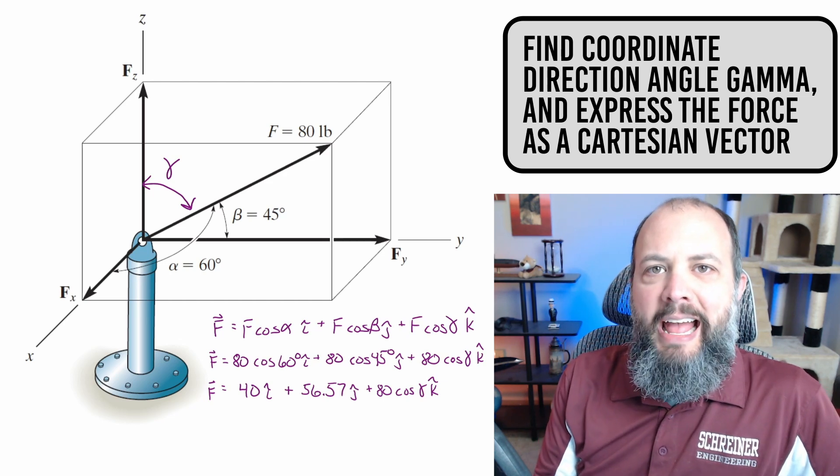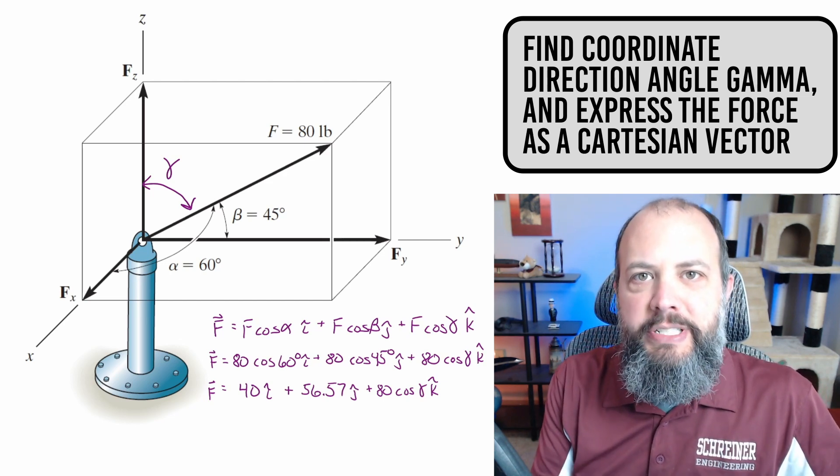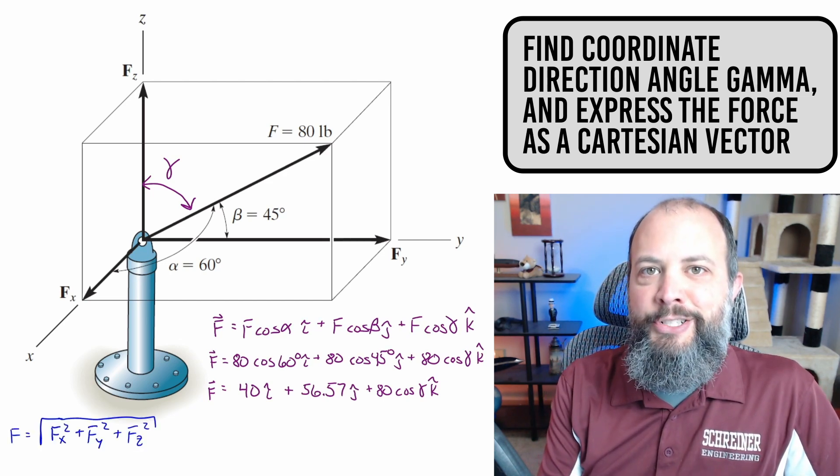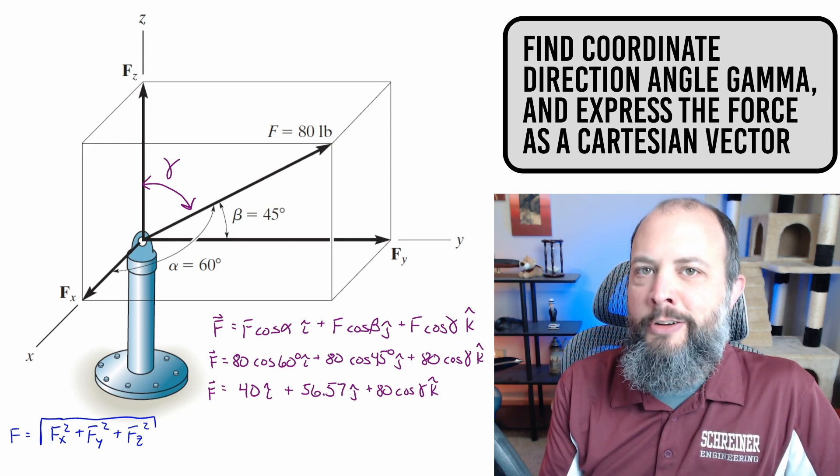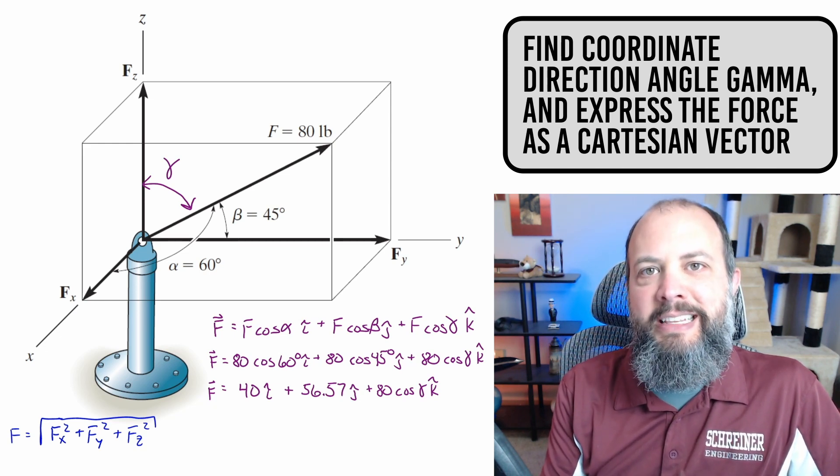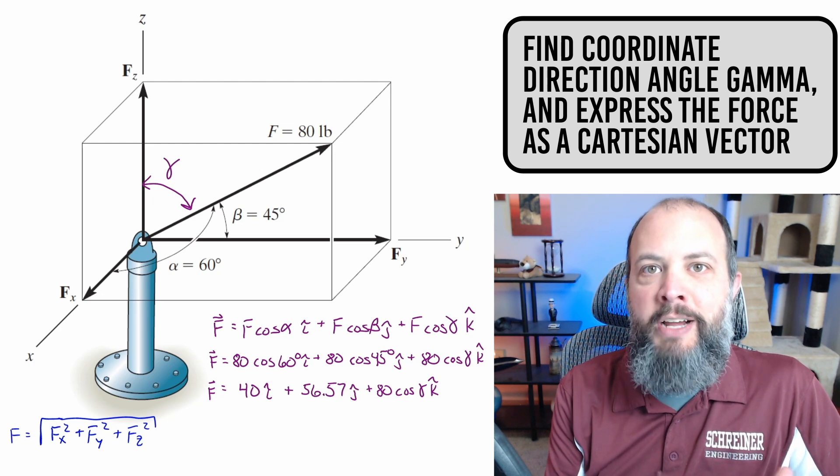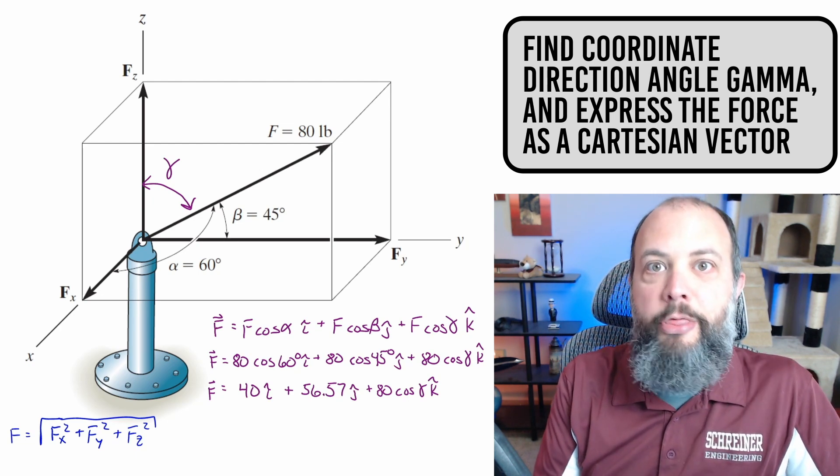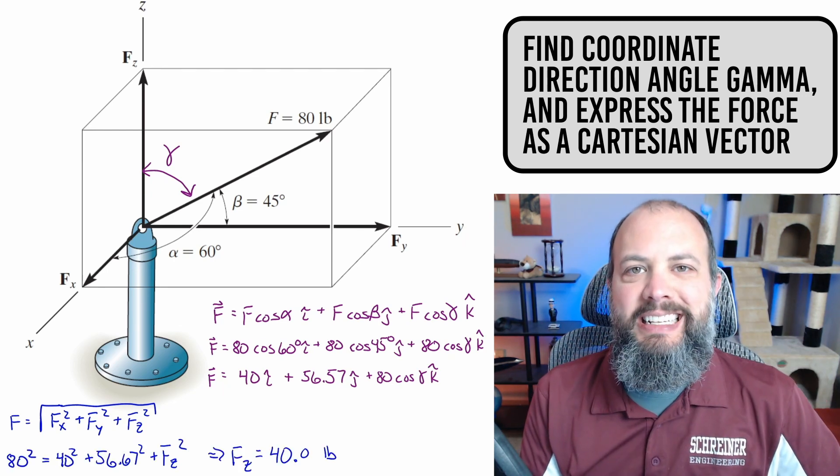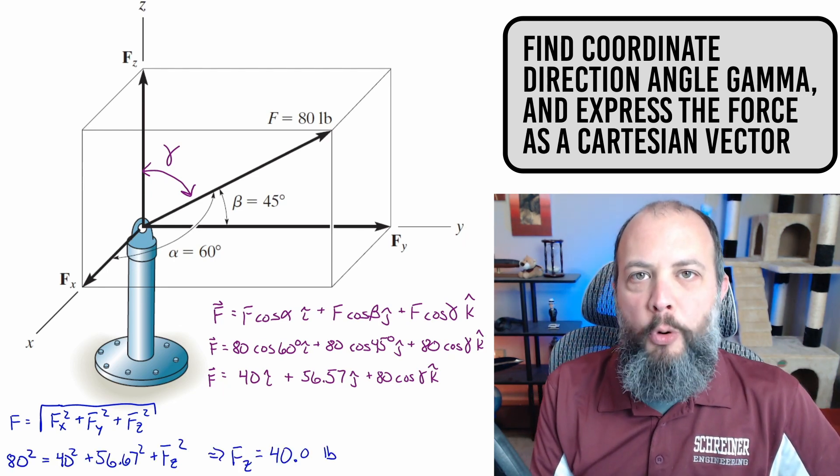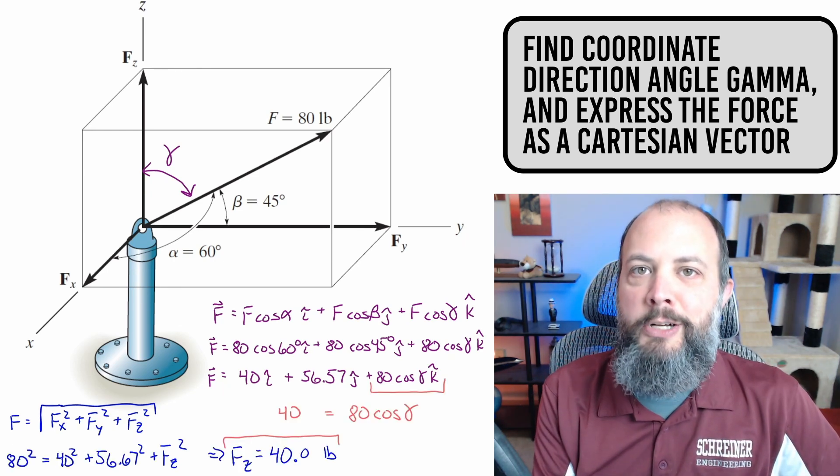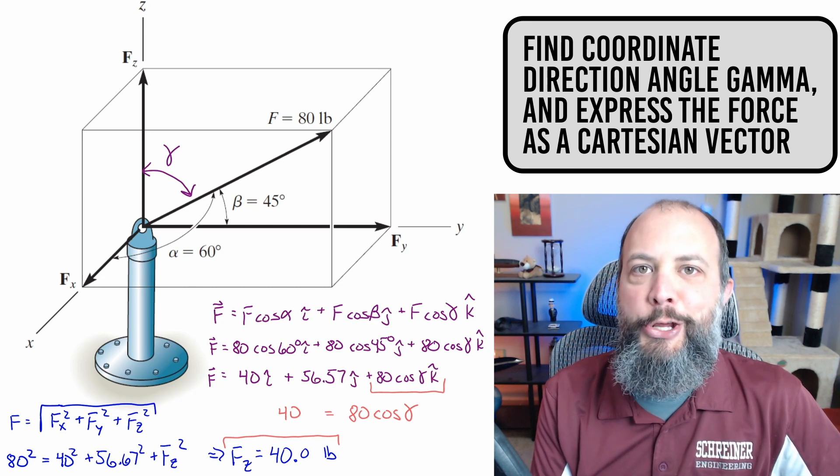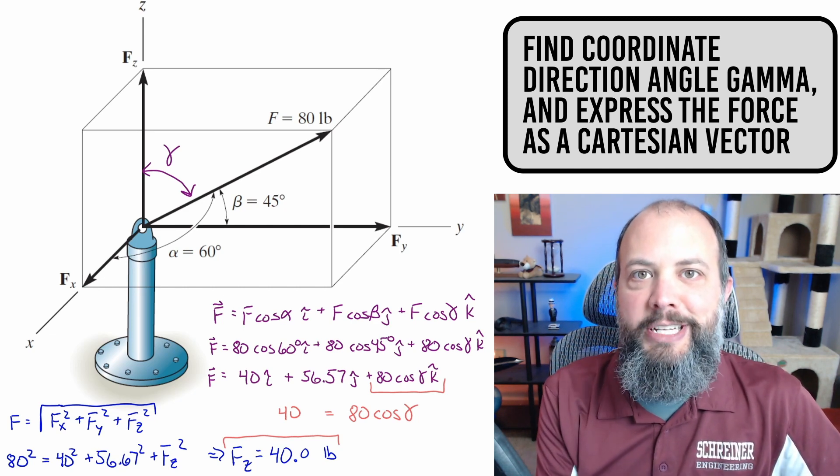But without that third angle gamma, it might seem kind of like you're stuck. So I'm actually going to first finish the Cartesian vector and go back and solve for angle gamma last. Because by the definition of the magnitude of a vector, it's equal to the square root of each of its components squared. It's a 3D Pythagorean theorem. So that gets us to a Z component of 40 pounds. And that 40 pounds will also be equal to 80 cosine gamma, and use this relationship to solve for gamma.